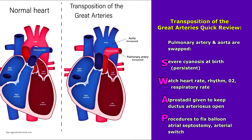Next up is transposition of the great arteries. Here we have two big arteries that have been swapped — the aorta and the pulmonary artery — so remember the word swap. The patient is going to have severe cyanosis at birth that is persistent. Watch the heart rate, rhythm, oxygen saturation, and respiratory rate. Alprostadil is given to keep open the ductus arteriosus until surgery can be performed.